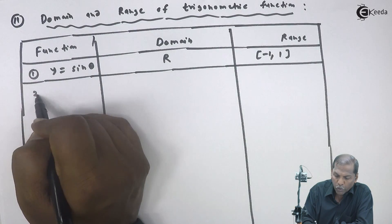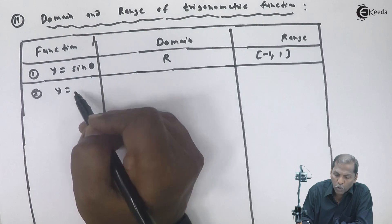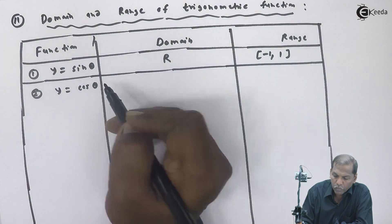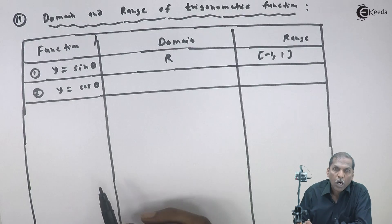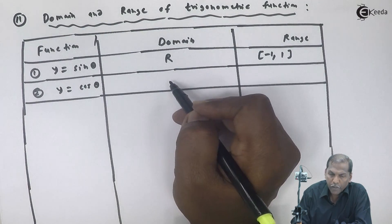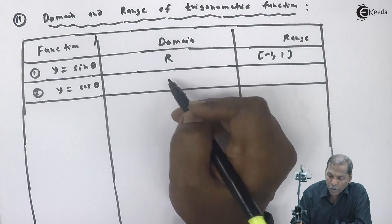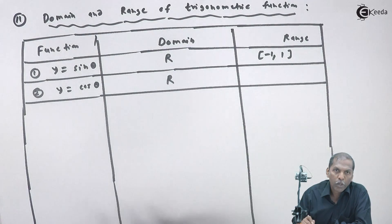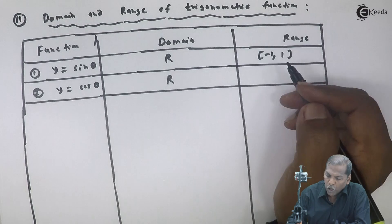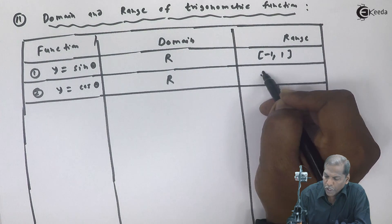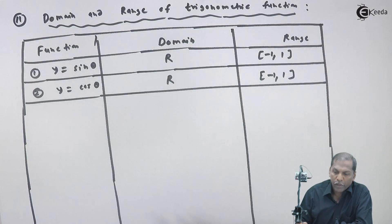Number two, the second function is y equal to cos theta. For cos theta, the domain is all real values, that is the set of real numbers, capital R. The range is the closed interval minus one to plus one.